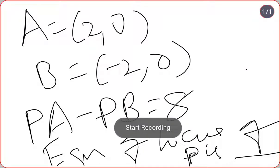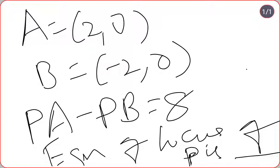Hey friends, welcome back to my YouTube channel. Today we are going to discuss one more shortcut trick related to locus. The question says: if A equals (2, 0), B equals (-2, 0), PA minus PB is equal to 8, then the equation of locus of P is?